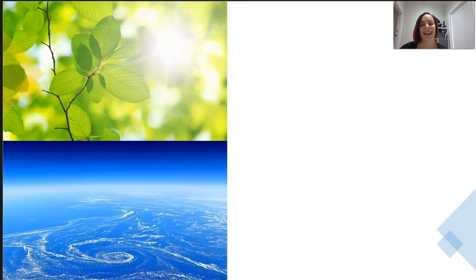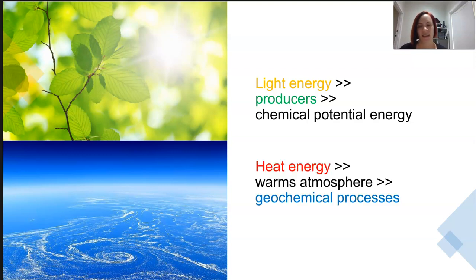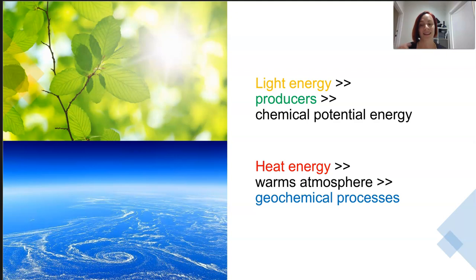At its essence, light and heat energy are emitted by the sun. The light energy is captured by photosynthetic organisms like plants and algae and converted into chemical potential energy. The heat coming from the sun warms the planet and allows geochemical processes to take place, like the tides, ocean currents, and weather systems.